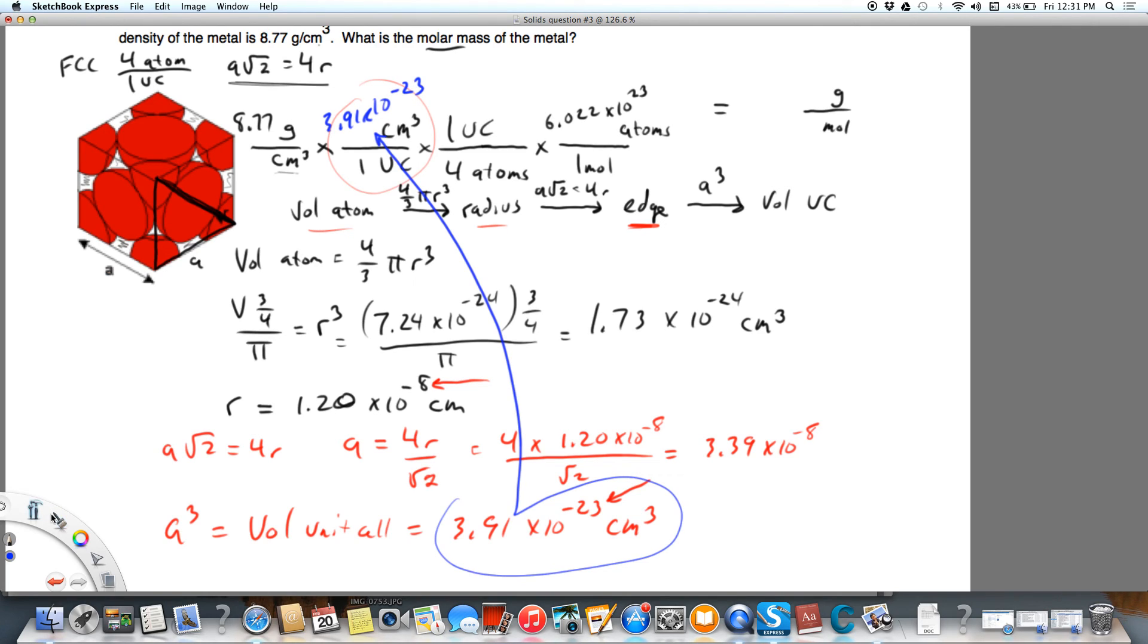All right, calculating all of that out, multiplying the density times volume of the unit cell, dividing by 4 atoms, multiplying by Avogadro's number, and we get an answer of 51.6 grams per mole. So, that's quite an extensive problem, and it's really important to remember that volume of the atom is different from volume of the unit cell.